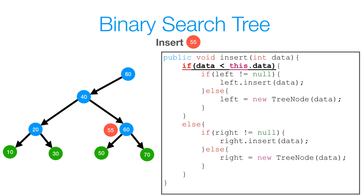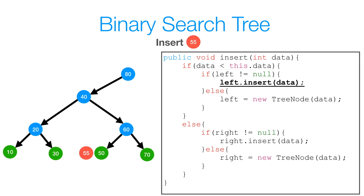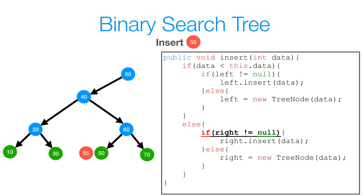Back at the start of the method again — our right is equal to null, which means we have to insert at this point. So we create a new TreeNode object and have our right reference variable refer to that new object. And we're done. This method does not return anything, so all the stack frames get popped off the call stack one after the next.